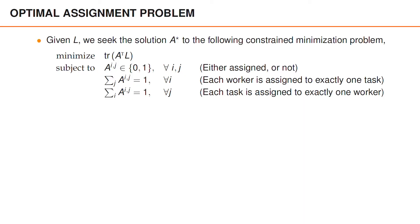Having introduced the cost matrix and the assignment matrix, we can give a mathematical definition to the optimal assignment problem. Given a cost matrix L, we seek the solution A star to the following constraint minimization problem. We wish to minimize, with respect to A, the cost, which is trace of A transposed L. The first constraint is that a worker and task are either assigned or not. And this means that each element in the assignment matrix is either 0 or 1.